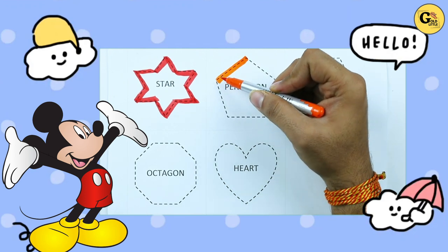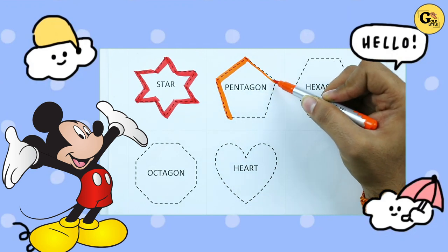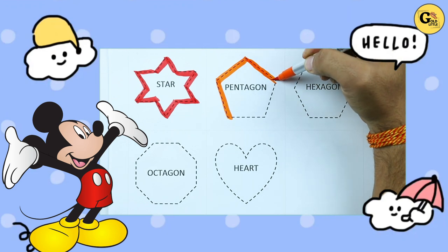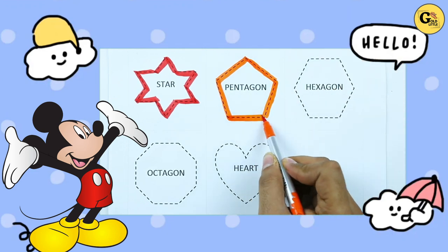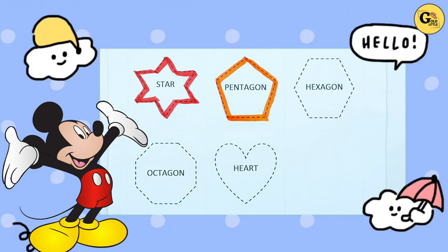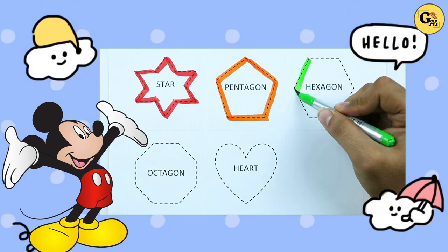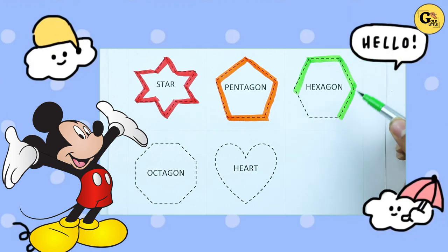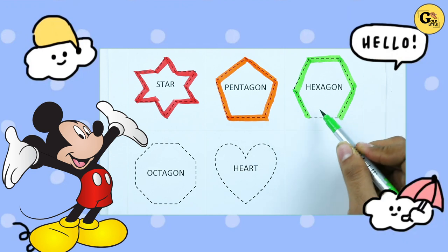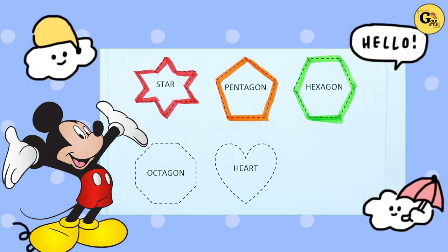Pentagon. One line, two line, three line, four line, five line, six line. It's a hexagon.